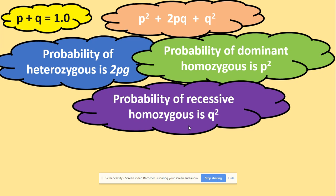So those are the things that you need to remember about the equations. So p and q stand for the frequency of the alleles and those equal one. p squared is the probability of the dominant homozygous, 2pq is the probability of the heterozygous, and q squared is the probability of recessive homozygous and all of those equals one as well.